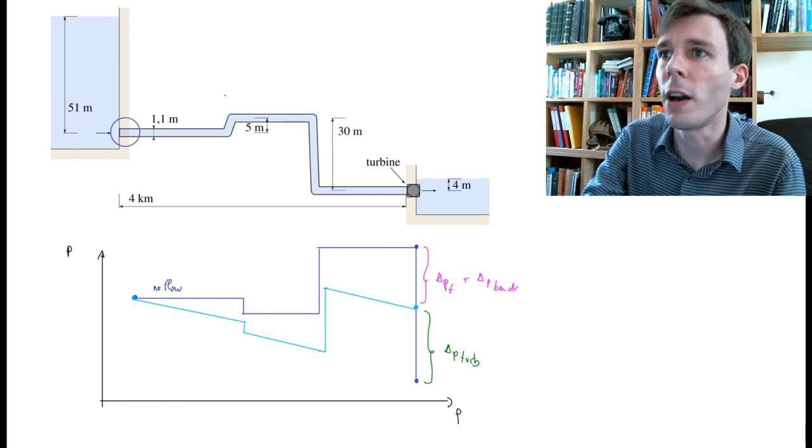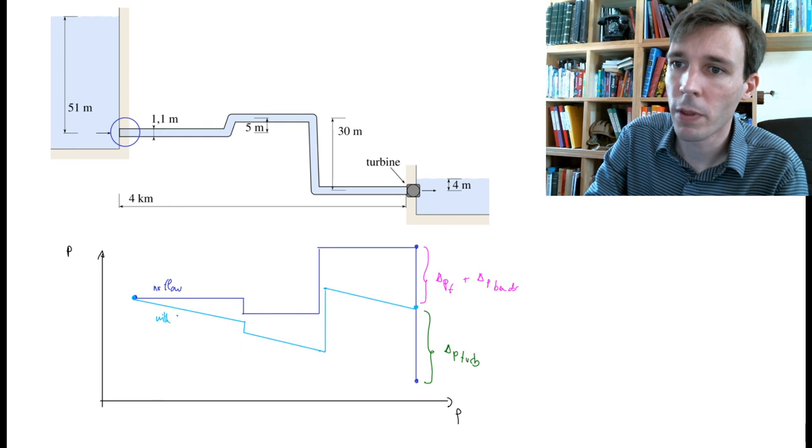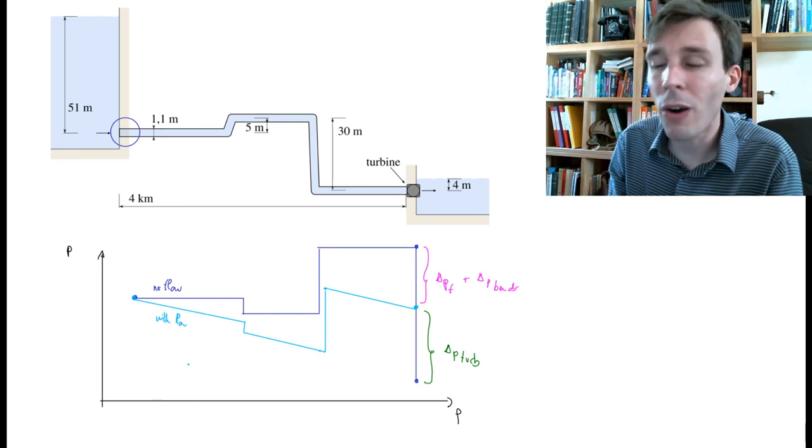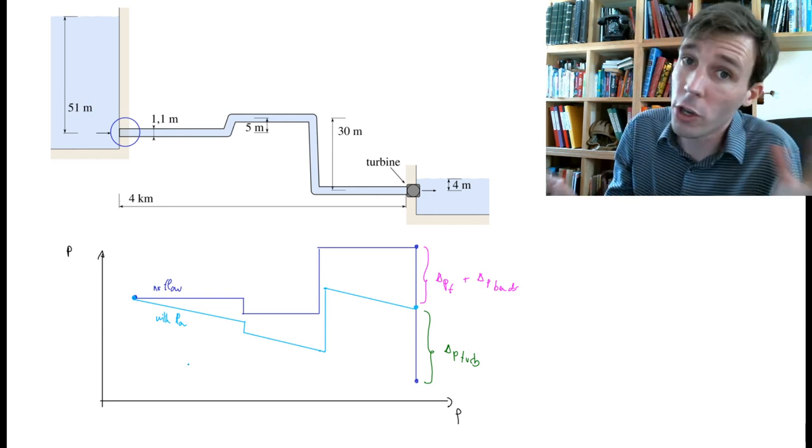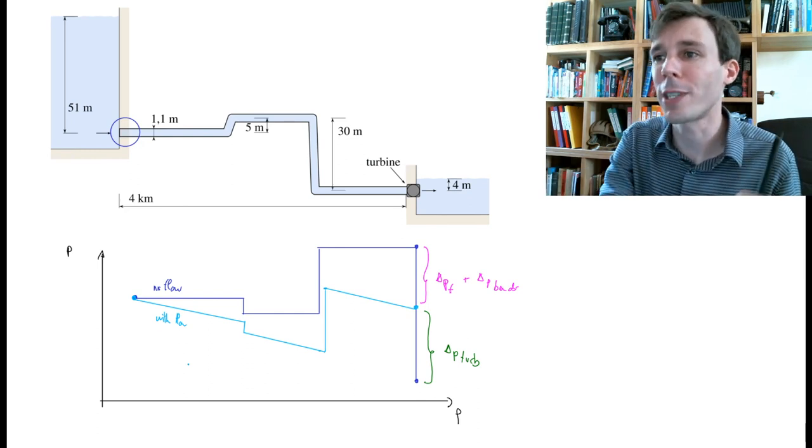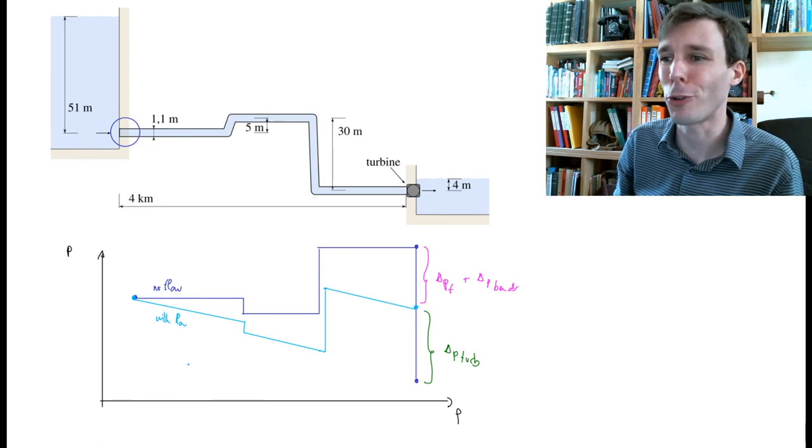So this would be the pressure drop with flow, the pressure distribution with flow. And this is how you plot the pressure distribution in a qualitative way inside the given pipe where water flow is happening and the pressure drops across the two sides of the turbine to extract power.